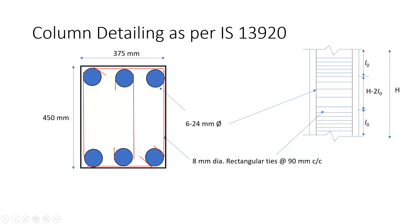Now as per the ductile detailing provisions of IS 13920 we need to provide special confining reinforcement near the beam column junction.